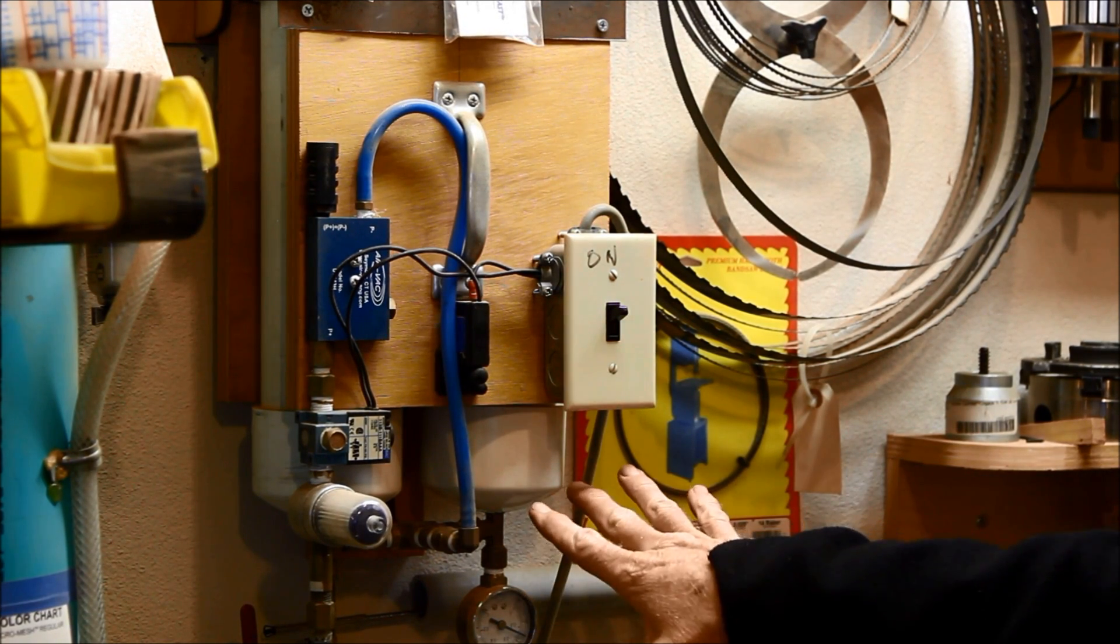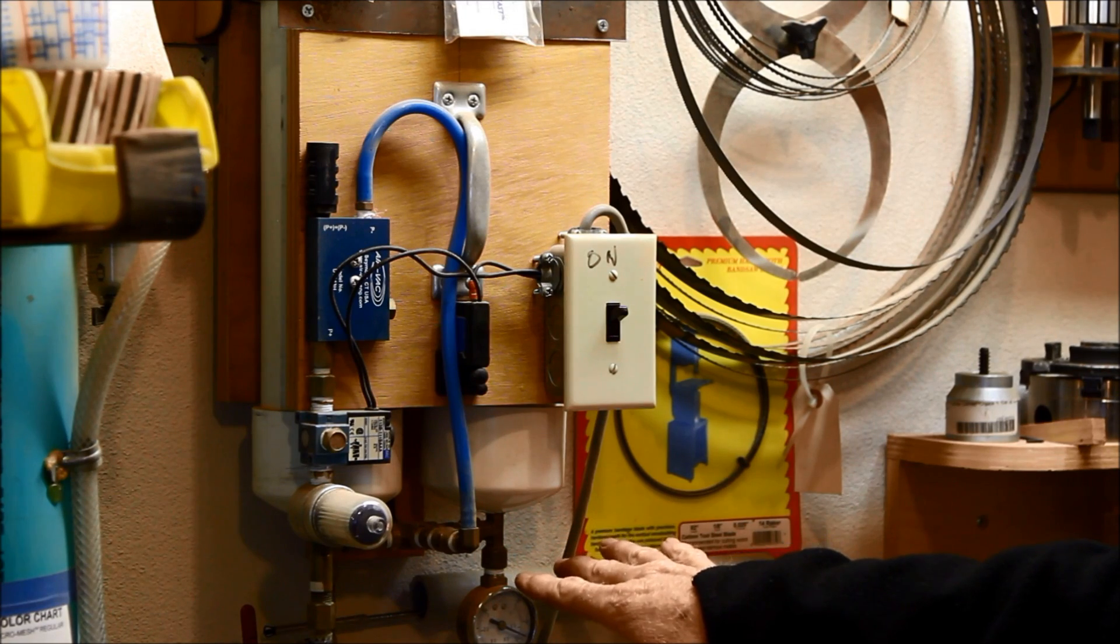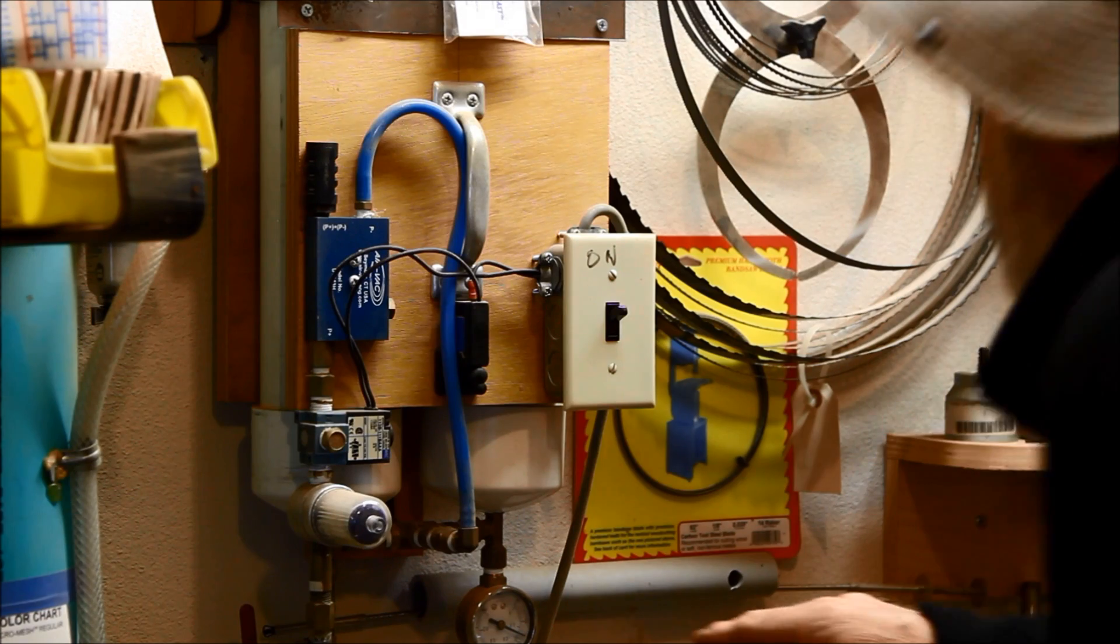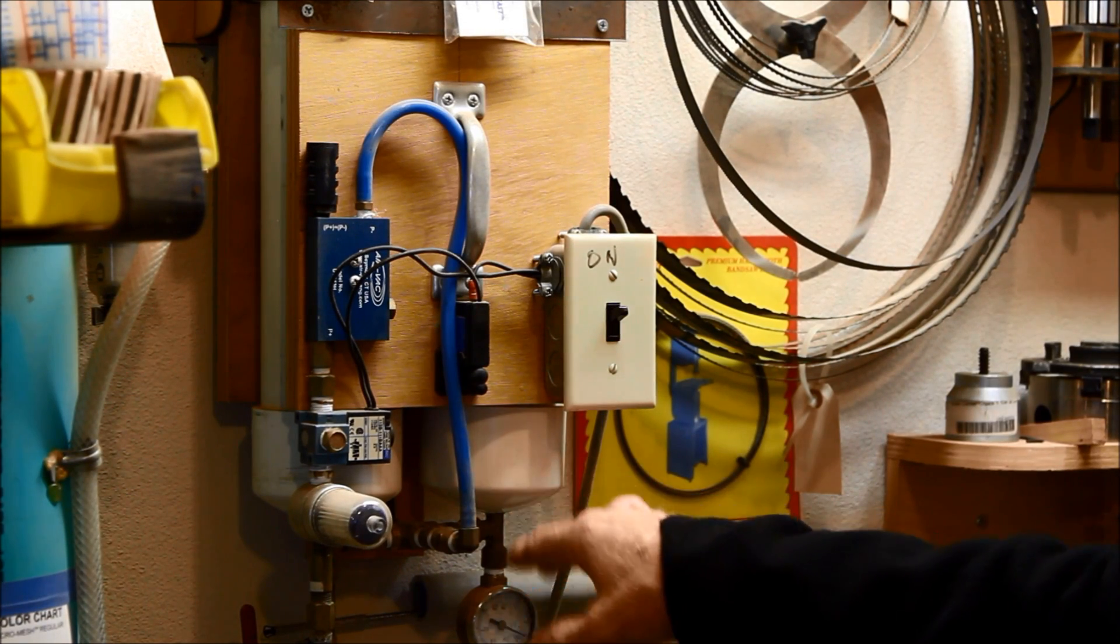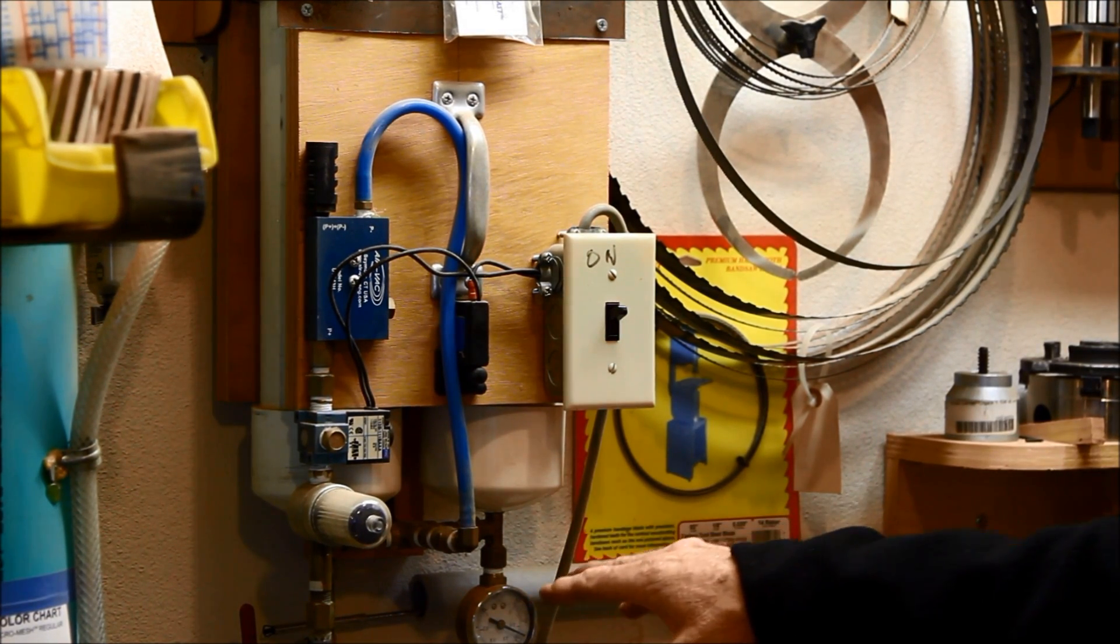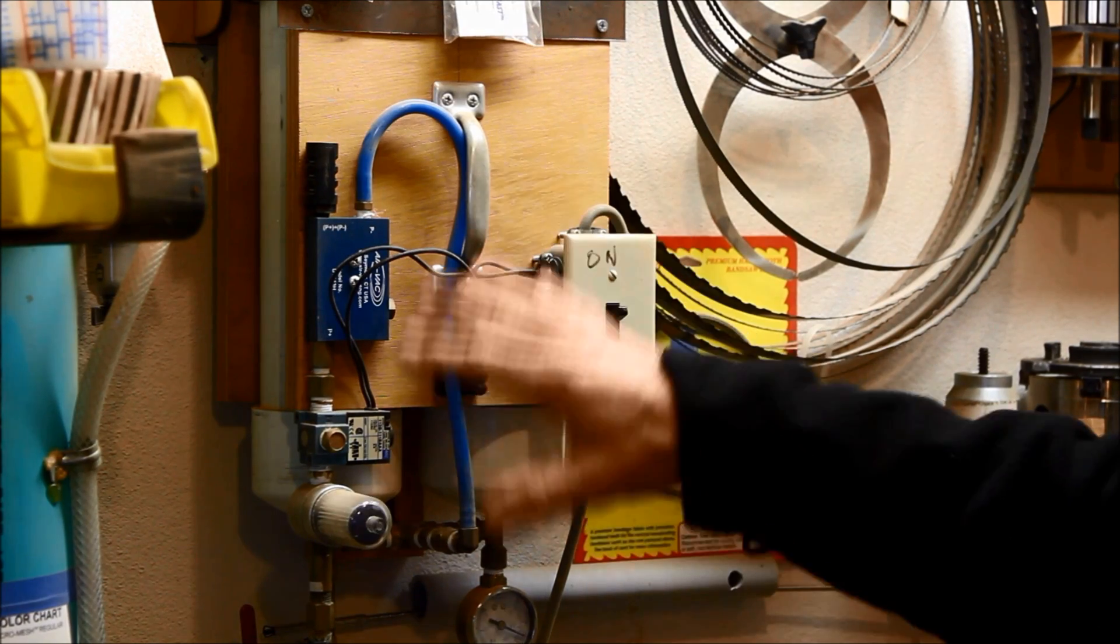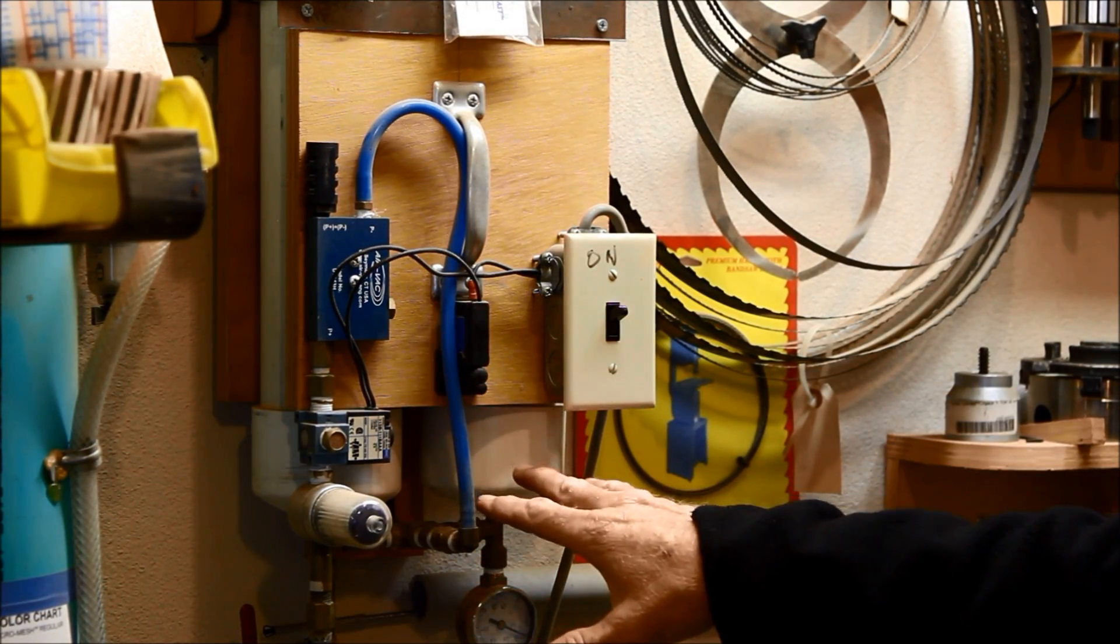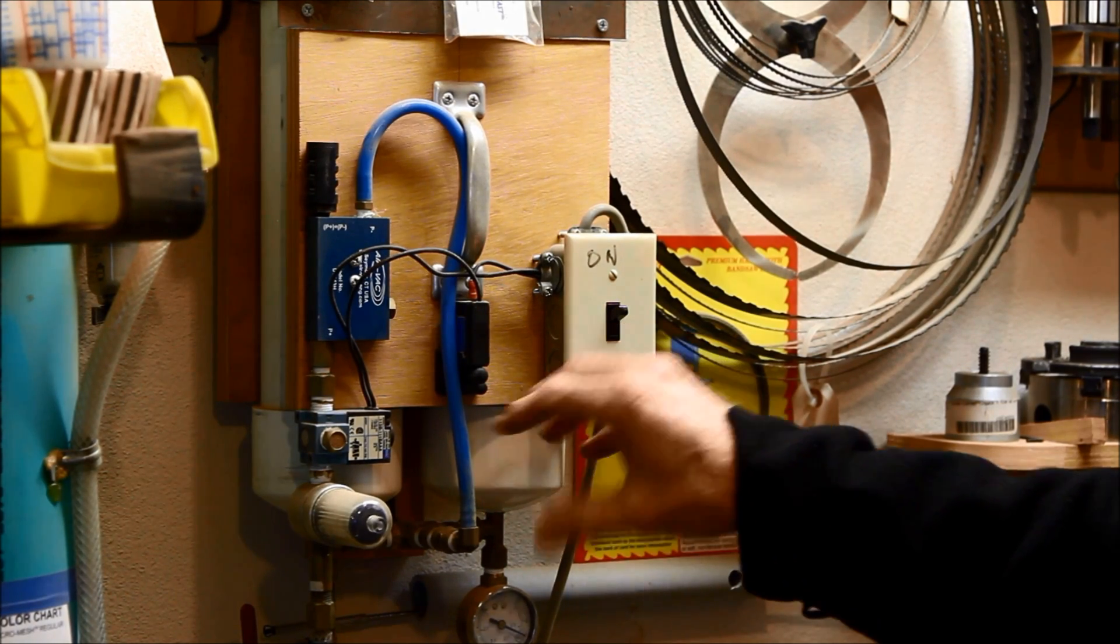And when it gets up to what it needs to be, it shuts itself off. And it's still got a vacuum. I'm only pulling like 22 negative pounds of mercury or whatever they want to call it. But I save a lot of electricity because my compressor doesn't have to constantly keep running because I've got a storage of vacuum.